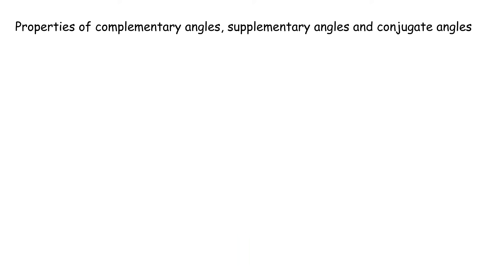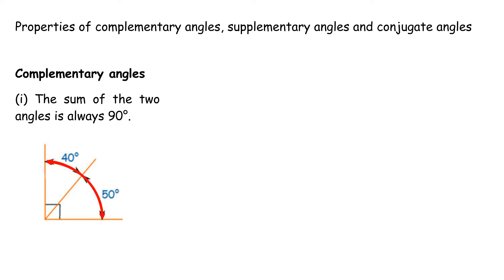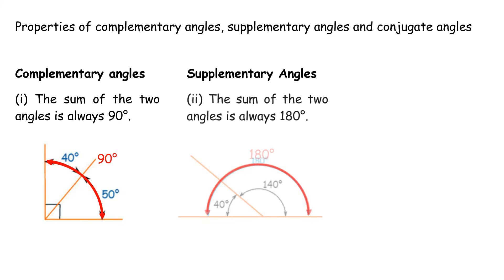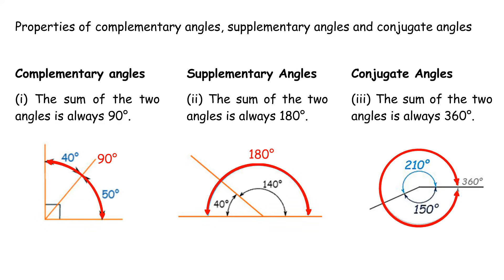Properties of complementary angles, supplementary angles, and conjugate angles. 1. Complementary angles: the sum of the two angles is always 90 degrees. 2. Supplementary angles: the sum of the two angles is always 180 degrees. 3. Conjugate angles: the sum of the two angles is always 360 degrees.